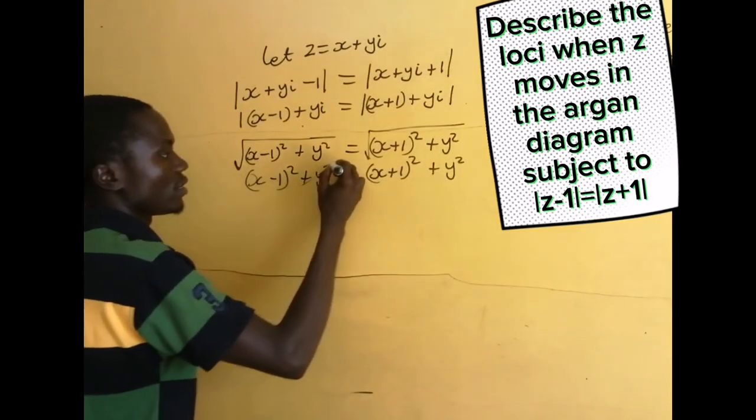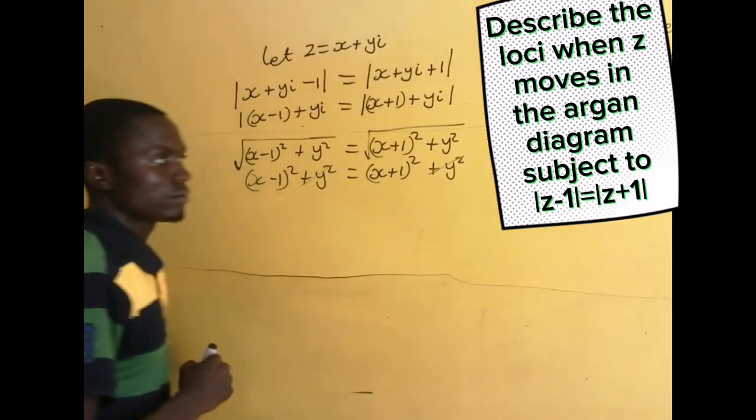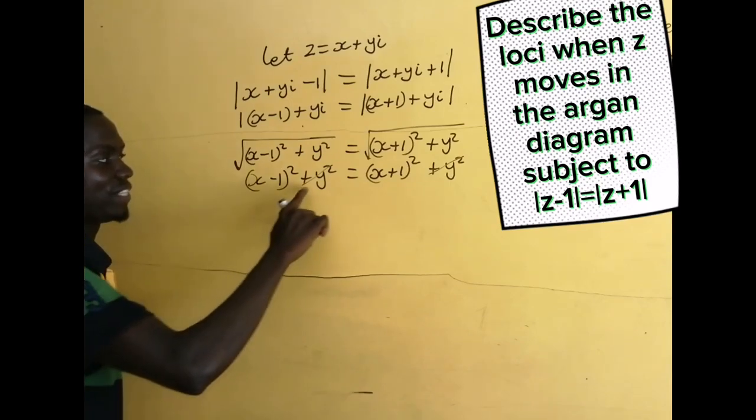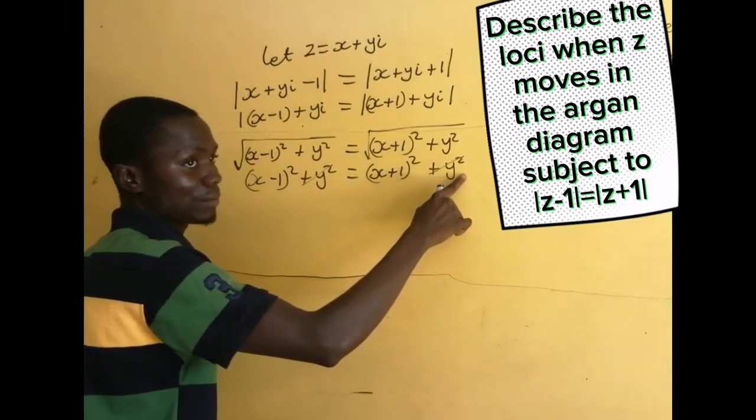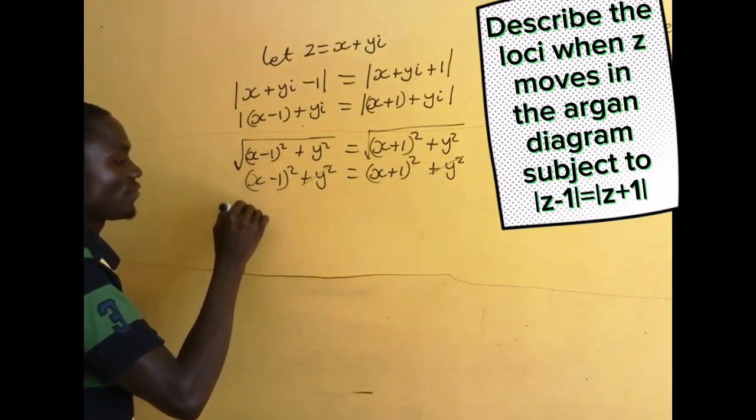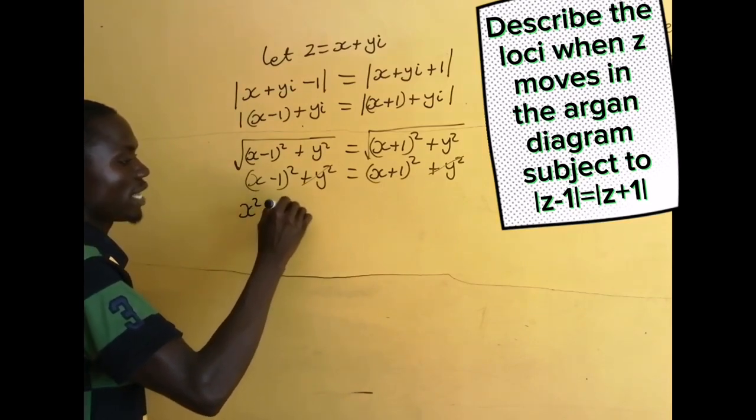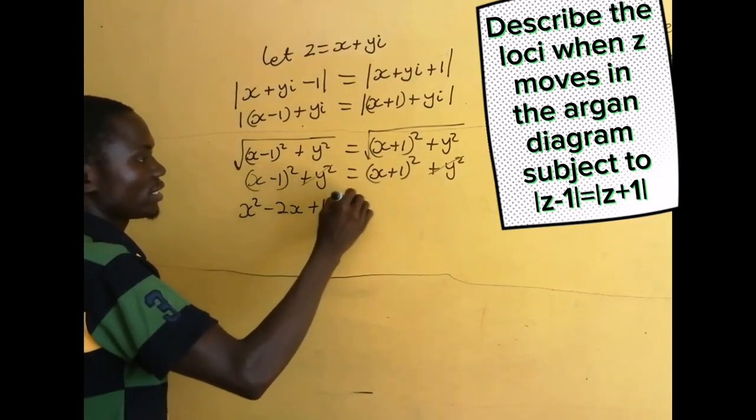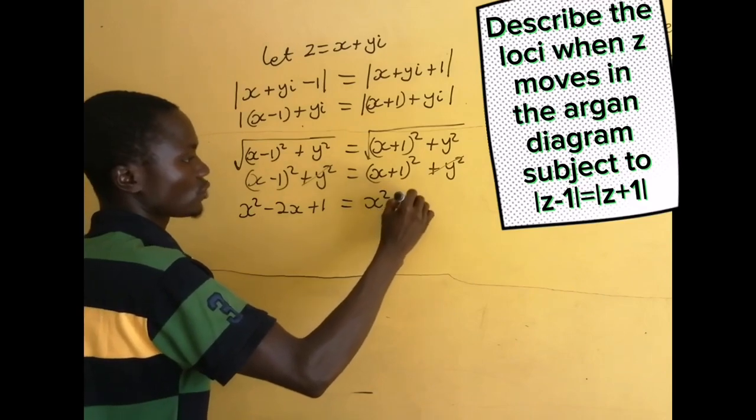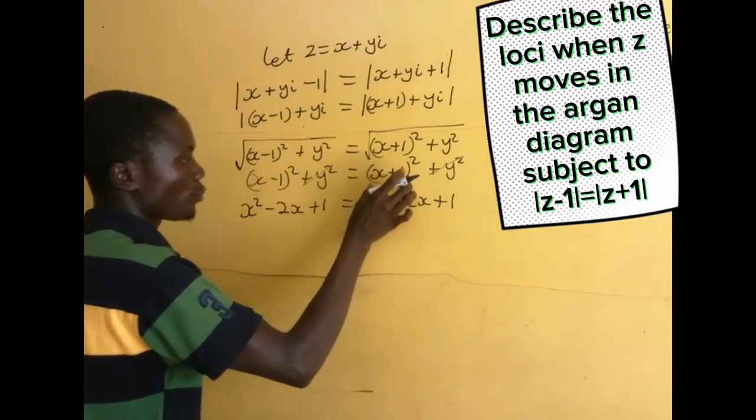Upon expansion, we have x² - 2x + 1 = x² + 2x + 1.